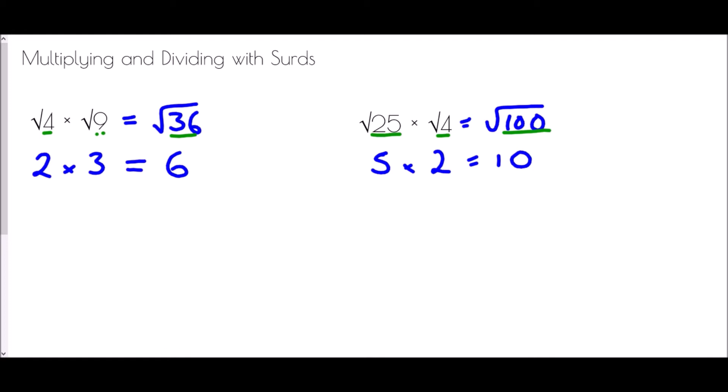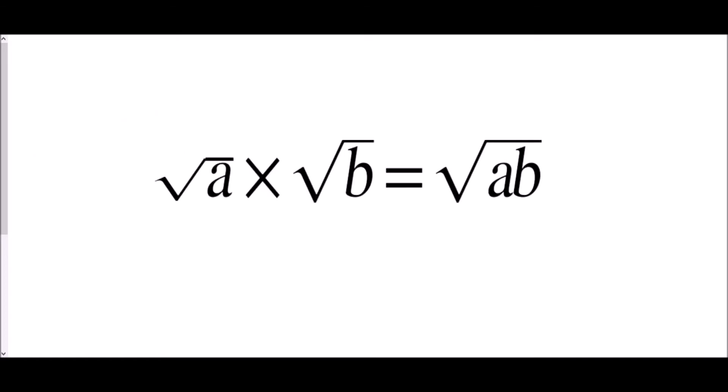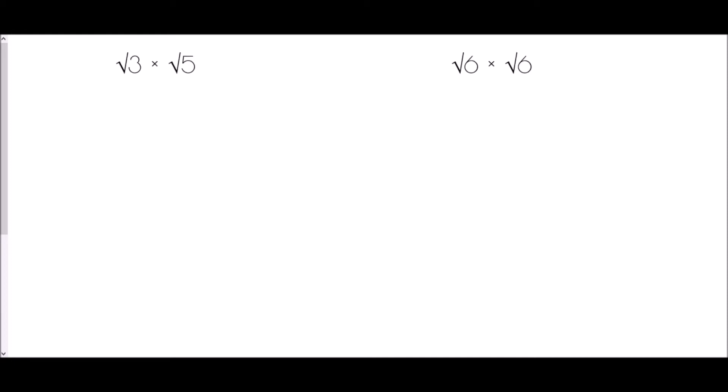Therefore what we have here is a very quick rule about surds: the square root of a times the square root of b is exactly the same as the square root of a times b. So let's see if we can use that with some real surds. Root 3 times root 5 — how would I simplify that? All we need to do is multiply the two numbers together and write it under a root symbol. So 3 times 5 is 15, giving us root 15.